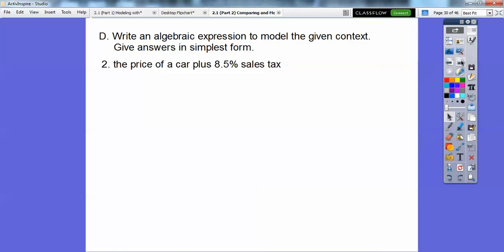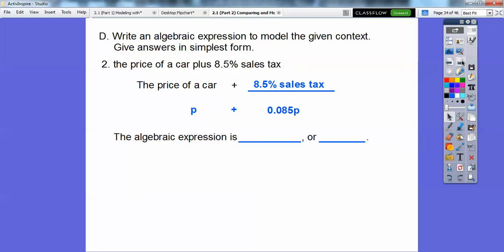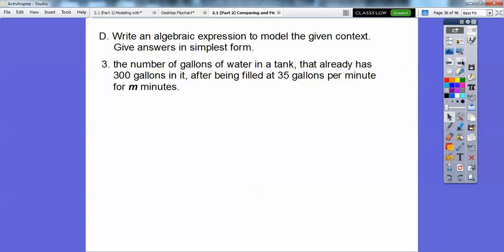Same thing here. The price of a car plus 8.5% sales tax. The price of a car plus 8.5% sales tax. If we moved it two places, 1, 2, 0.085. I'll let that be P again. So we get P plus 0.085P or 1.085P. Piece of cake.